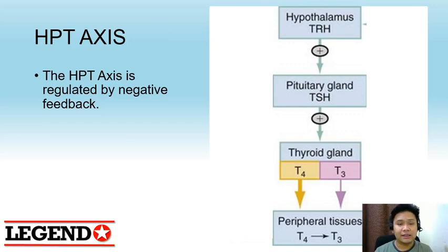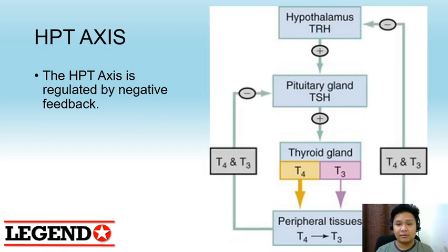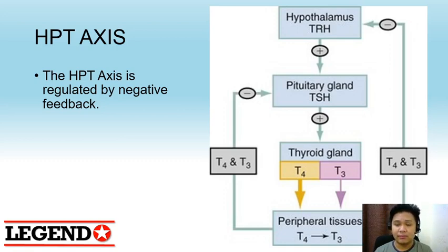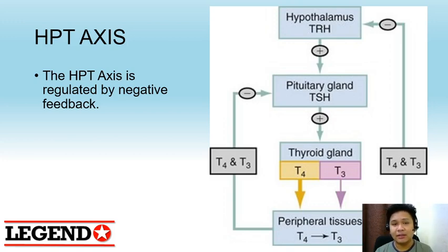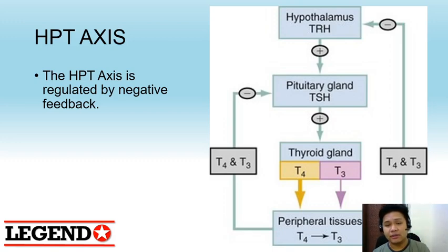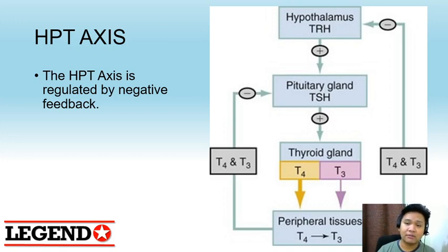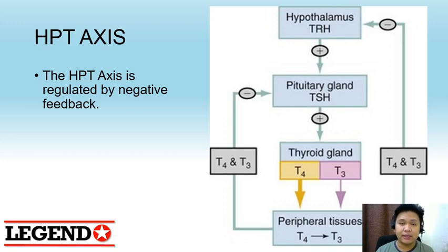This HPT axis is controlled by negative feedback. This means that if you have increased levels of T4 and T3, this will send signals to the hypothalamus as well as the pituitary to decrease their secretions, thereby maintaining normal levels of T4 and T3. On the other hand, if you have decreased levels of T4 and T3, negative feedback is removed and the hypothalamus and the pituitary gland begin secreting high levels of TRH and TSH to push the thyroid gland to produce T4 and T3.